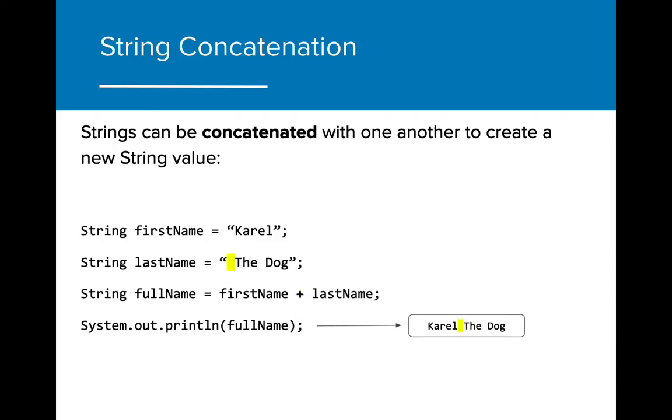If you notice in this example, the output is missing a space between Carol and the dog. When we concatenate, it's important to note where the spaces are in the program, as that affects what the output looks like.